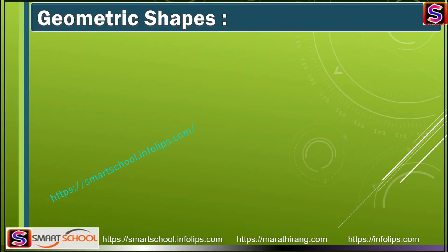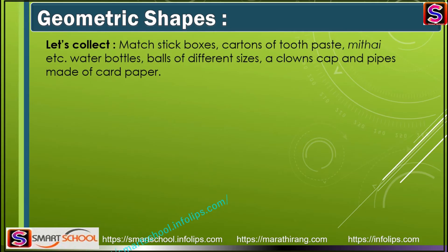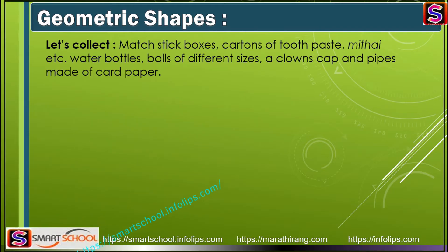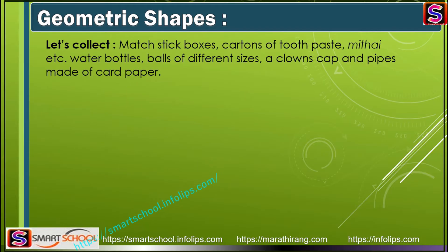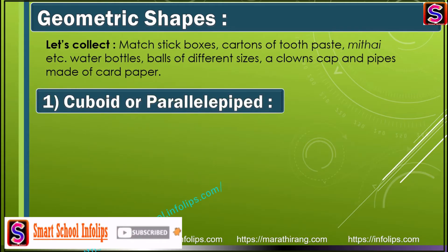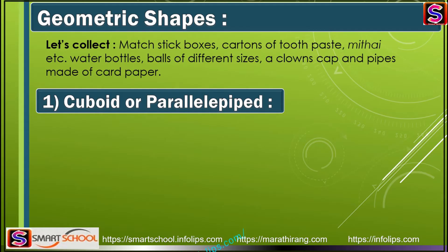Let's continue with geometric shapes. Let's collect some matchsticks, matchstick boxes, carton boxes, toothpaste boxes, water bottles, balls of different sizes, clown caps, and pipes. With these objects, you can find different types of shapes. The first shape is cuboid, also called a parallelepiped.